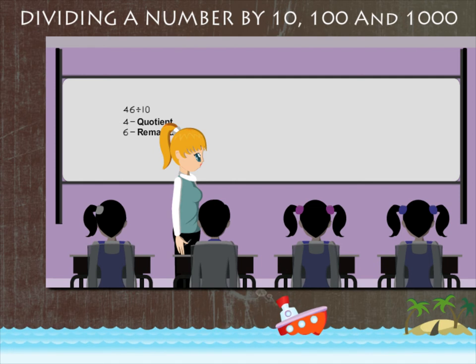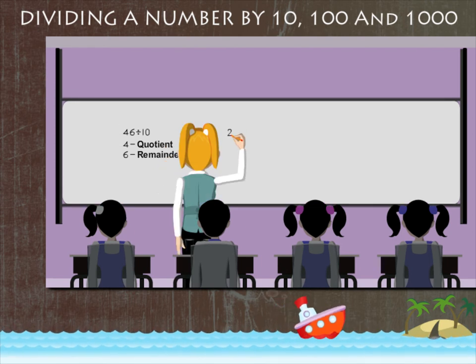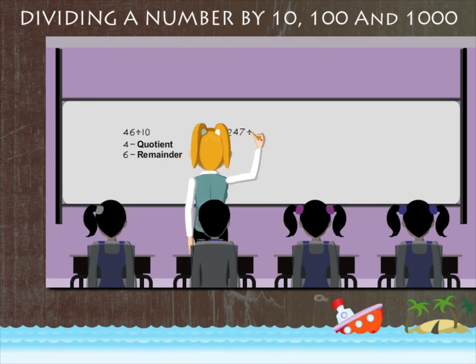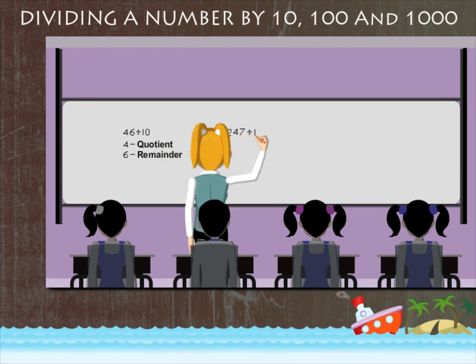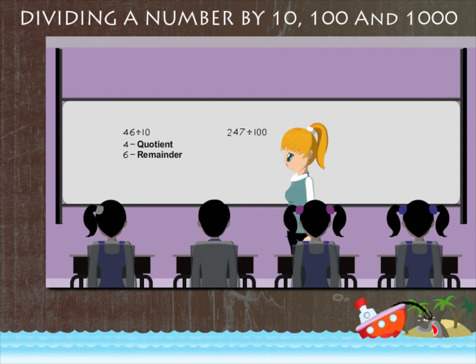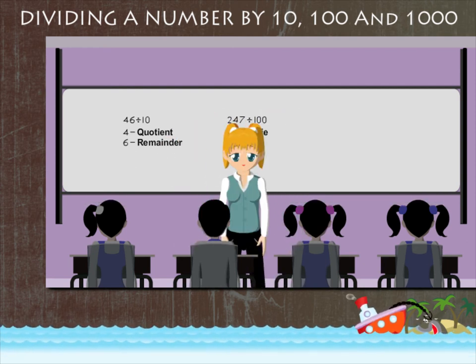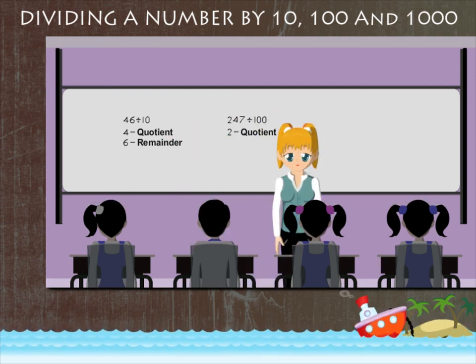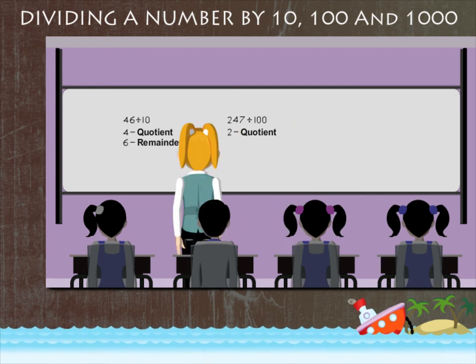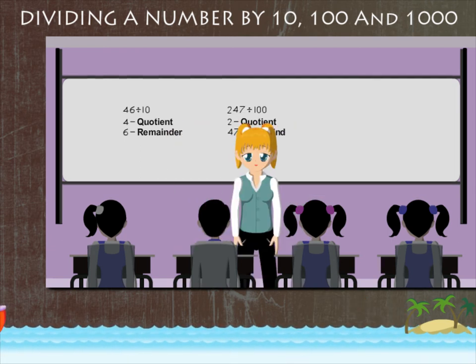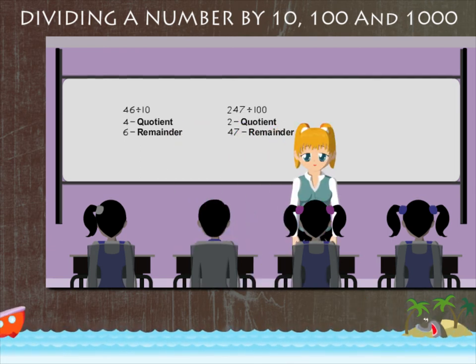Easy. Now it's 247 divided by 100. Here also, 2 is the quotient and 47 is the remainder.